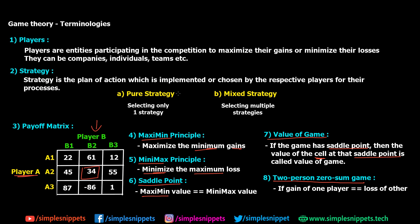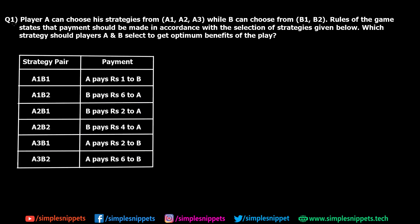Let's start with the pure strategy numerical. Player A can choose from strategies A1, A2, and A3, while player B can choose from B1 and B2. The rules state that payments are made according to the selected strategies shown in the table. We need to find which strategies A and B should select for optimum benefit. First, we need to create the payoff matrix.